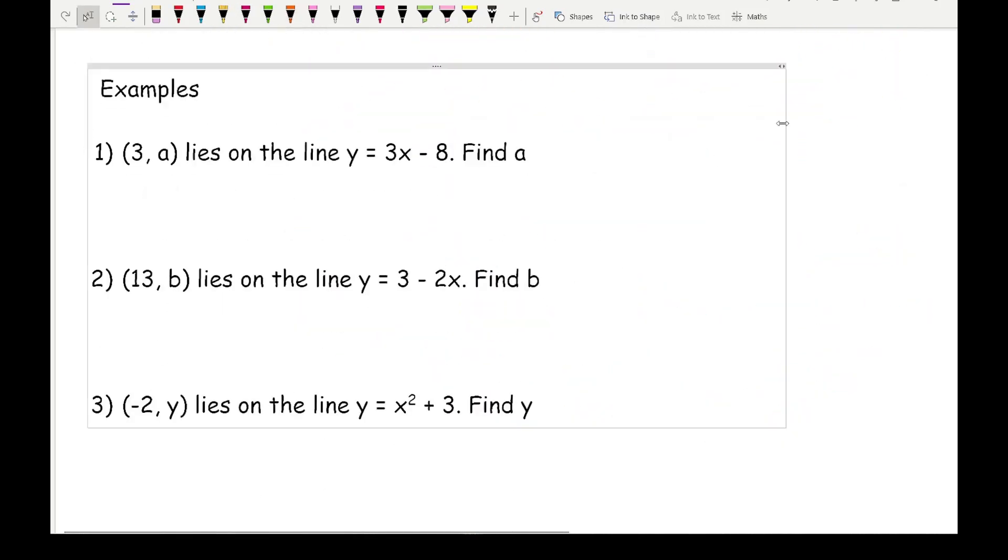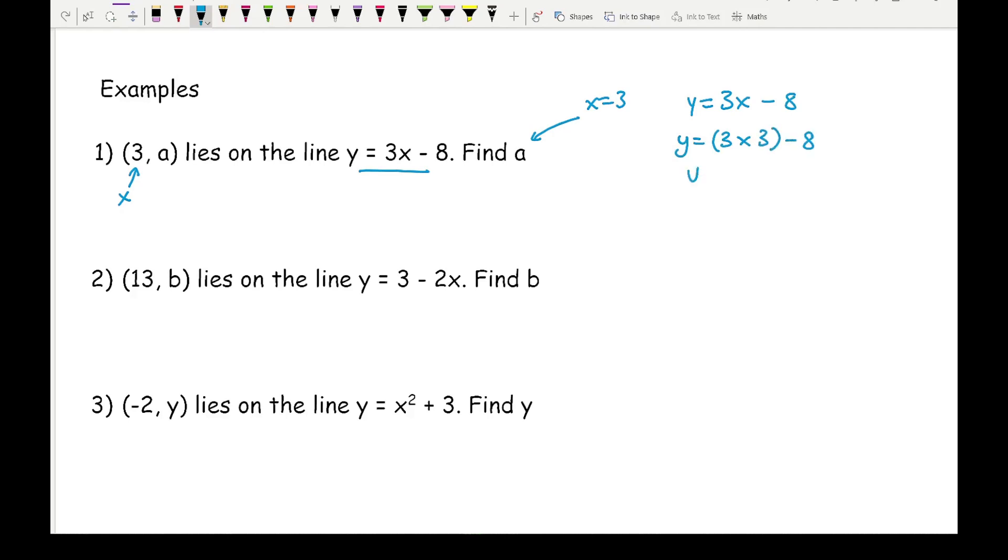Now let's look at some common examples. Here we've been given that the coordinate (3, a) lies on the line. We know that this point definitely lies on that line, so all we need to do is find the y ordinate. For this particular question, I need to substitute x equals 3 into this equation. So I've got y equals 3x minus 8, substituting x equals 3.